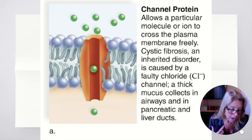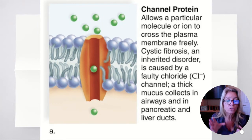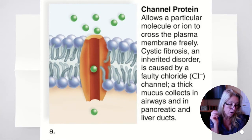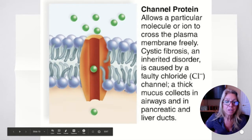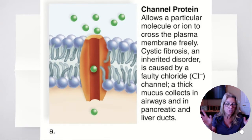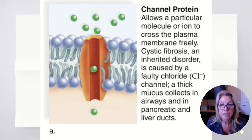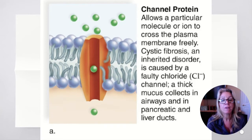An example of where channel proteins don't work: cystic fibrosis. This is an inherited disorder where just one type of channel is not working. What it doesn't allow to pass freely is chloride ions. If your chloride ions cannot pass freely through those particular protein channels, then you will have cystic fibrosis.